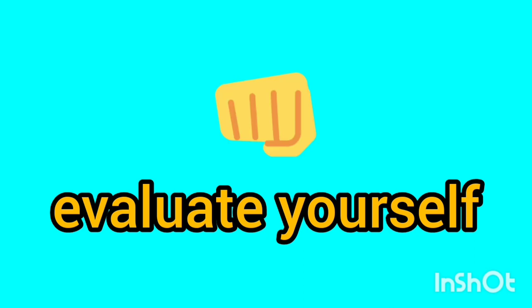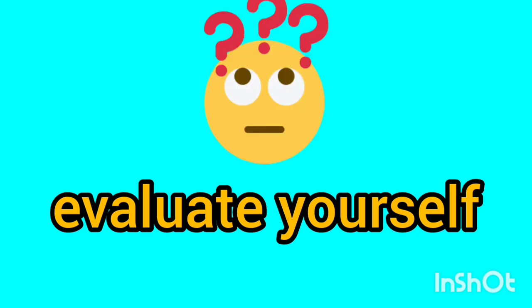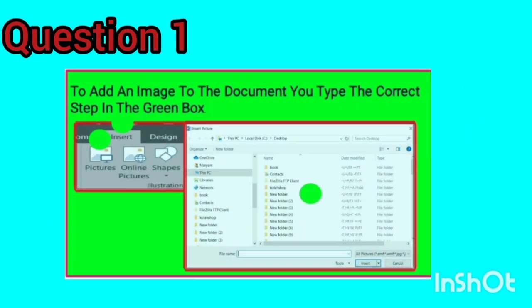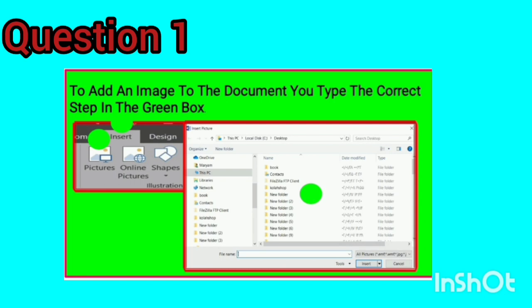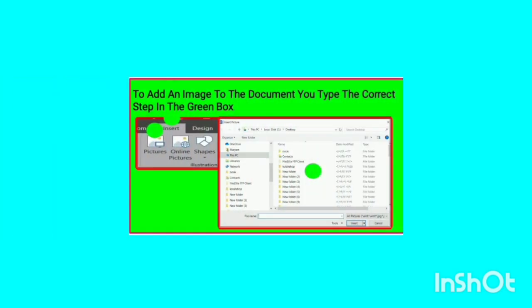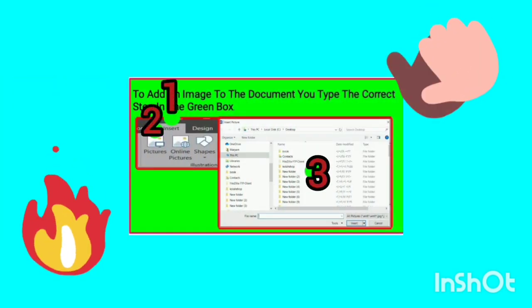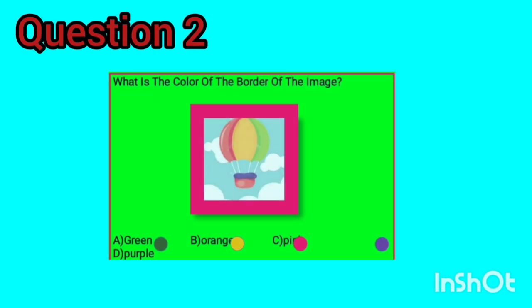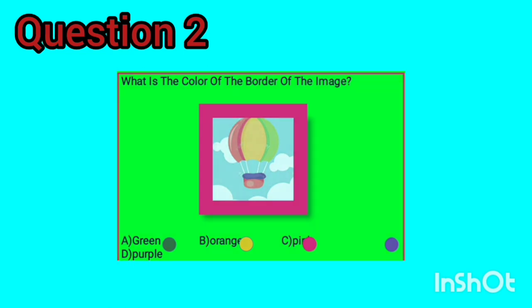Dear children, evaluate yourself and tell me in the comments how many questions you answered correctly. Question 1: to add an image to the document, you use the Insert tab — type the correct answer in the green box. Question 2: what is the color of the border of the image? A. Green, B. Orange, C. Pink, D. Purple.